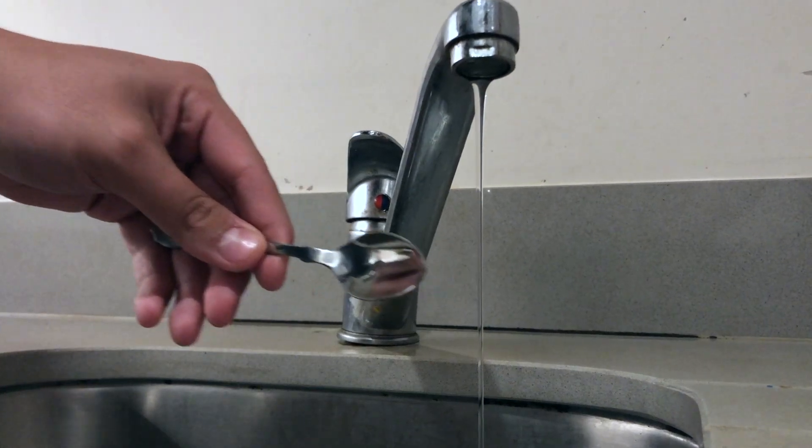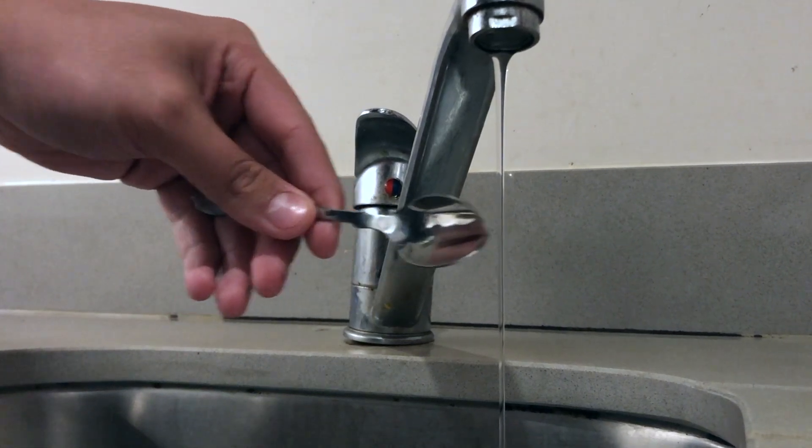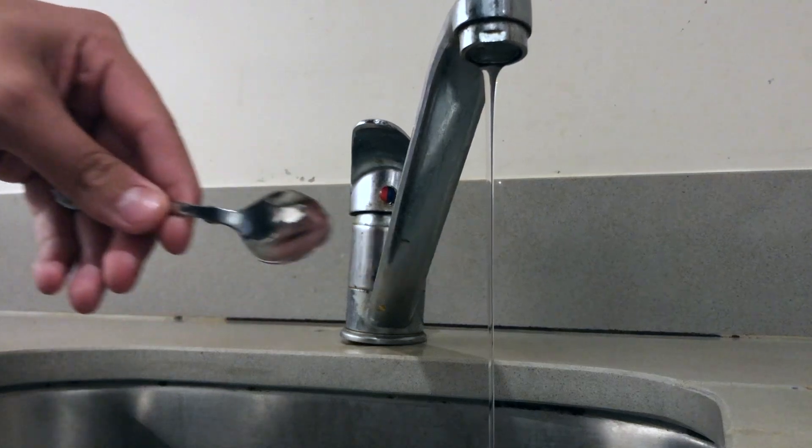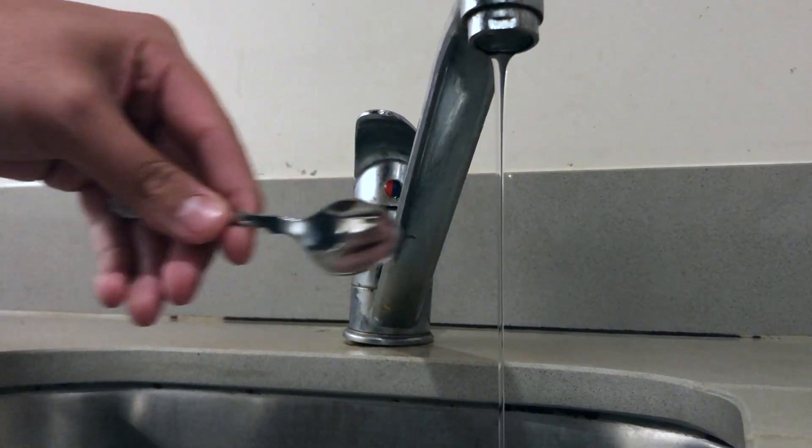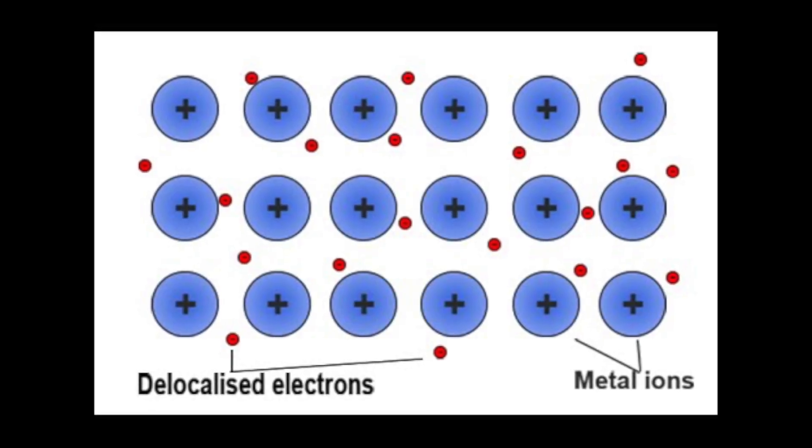This is completely different when metals are used instead of a balloon, like a spoon for example, because they are conductors. This means that electrons move easily through them, and this is due to metallic bonding.